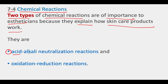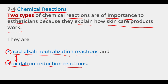The first one is acid-alkali neutralization reactions, and the second one is oxidation-reduction reactions. You'll notice in both cases you have acid on one side and oxidation on the other, and you have alkali and reduction. Acid works against a base or alkali, and alkali works against an acid — the same relationship exists between oxidation and reduction.